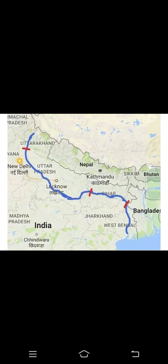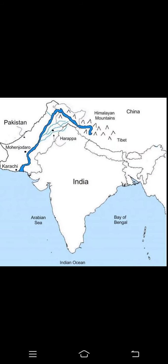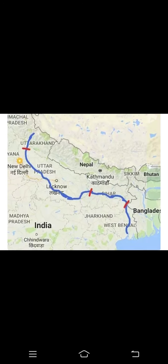Ganga receives a number of tributaries from the peninsula, like Chambal, Ken, Betwa, Son, Damodar, etc. This was all about the Ganga and Indus River, also called Sindhu River.